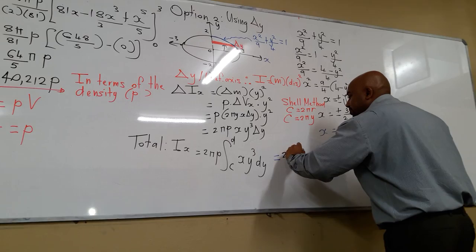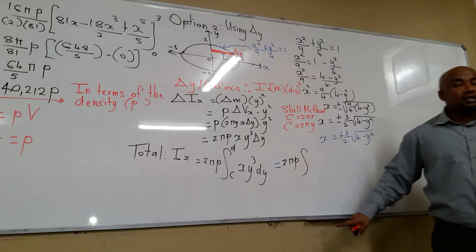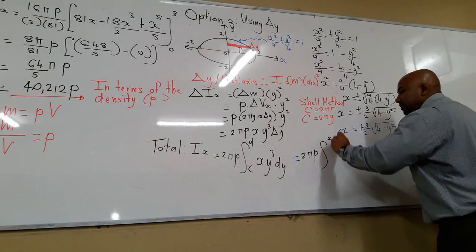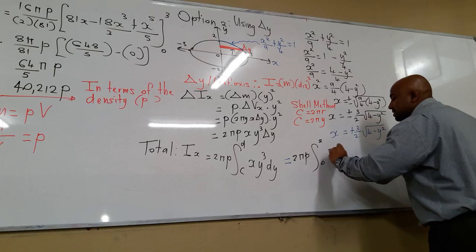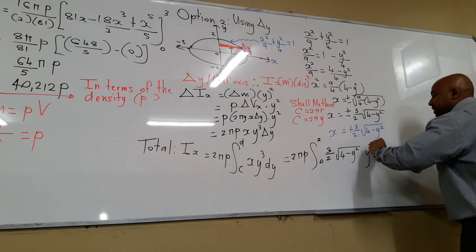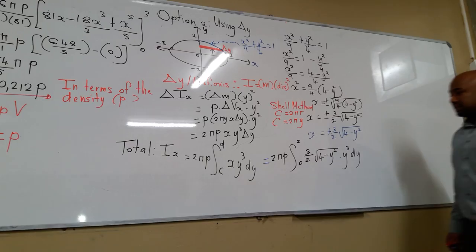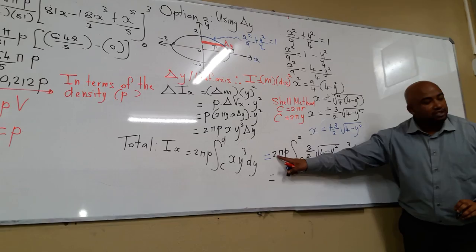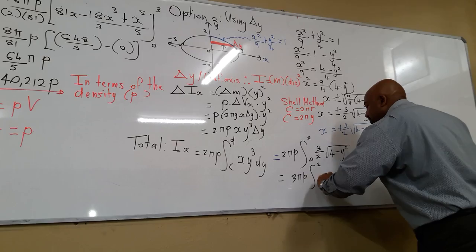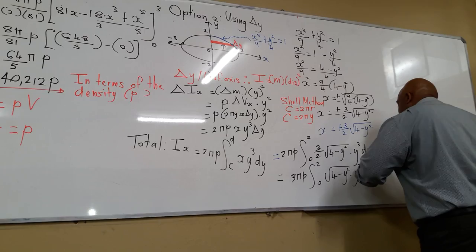Substituting: Ix equals 2 pi rho integrated from 0 to 2 of 3 over 2 times the square root of 4 minus y squared times y cubed dy. Simplifying the constants — 2 and 2 cancel — giving 3 pi rho integrated from 0 to 2 of square root of 4 minus y squared times y cubed dy. This is a much more difficult option because there is no exact derivative here.